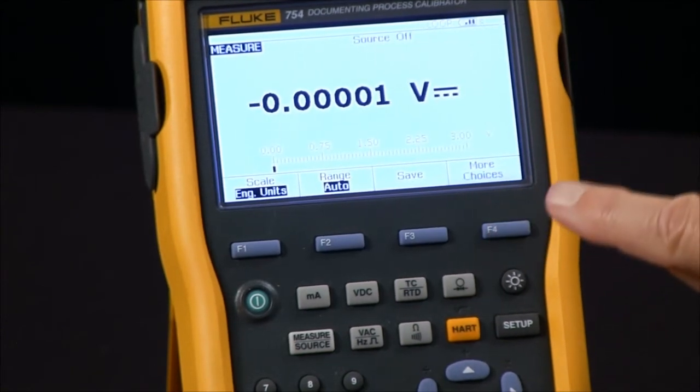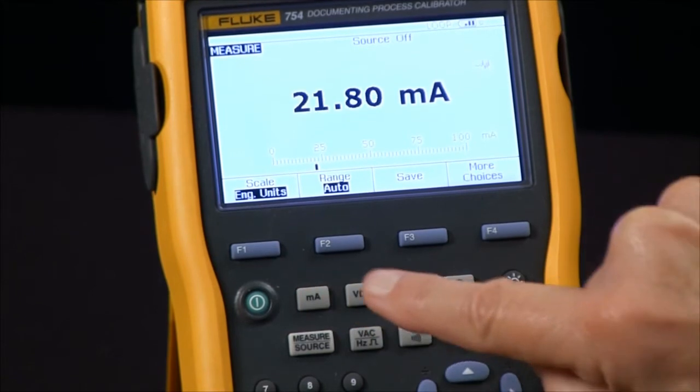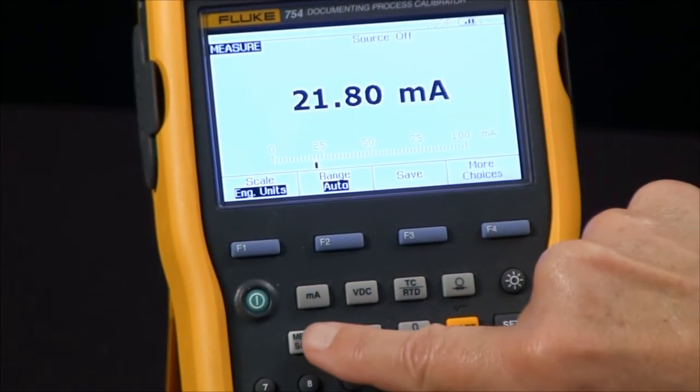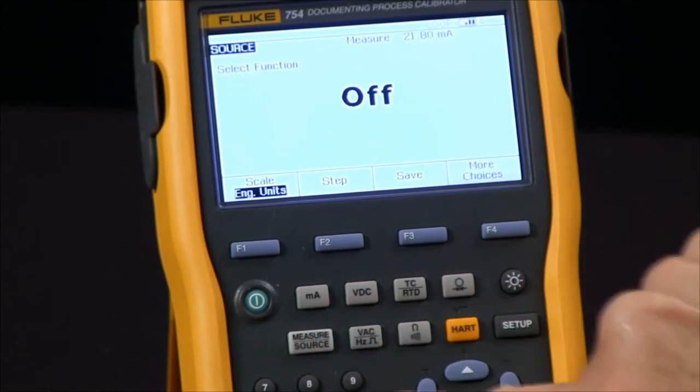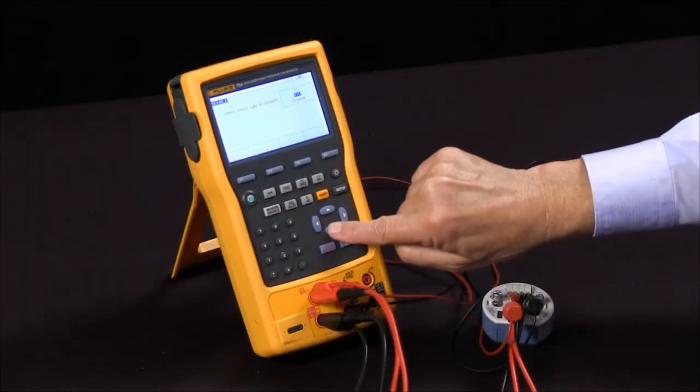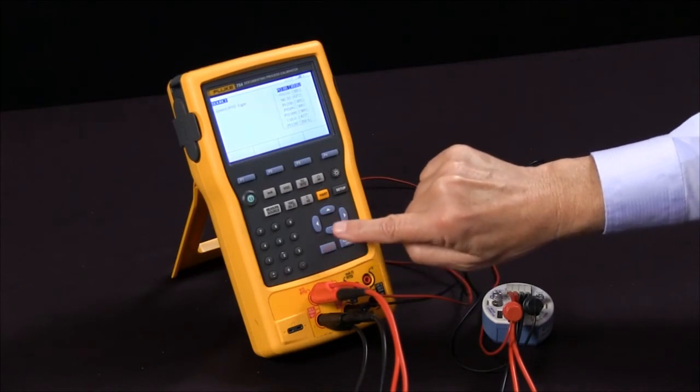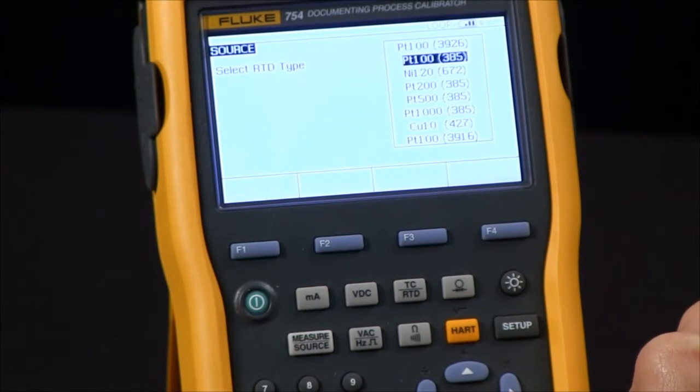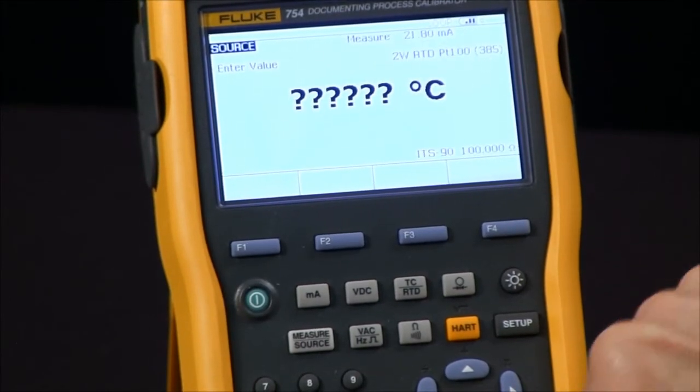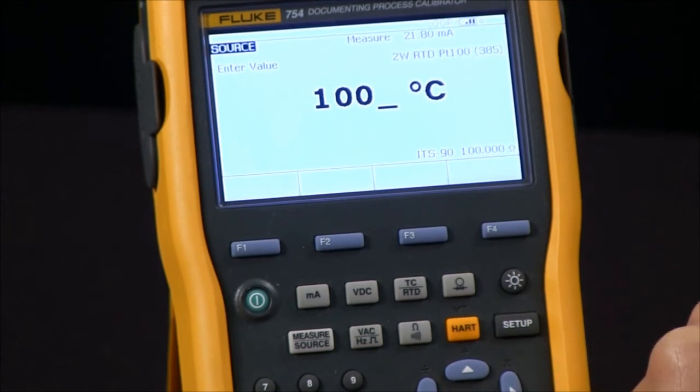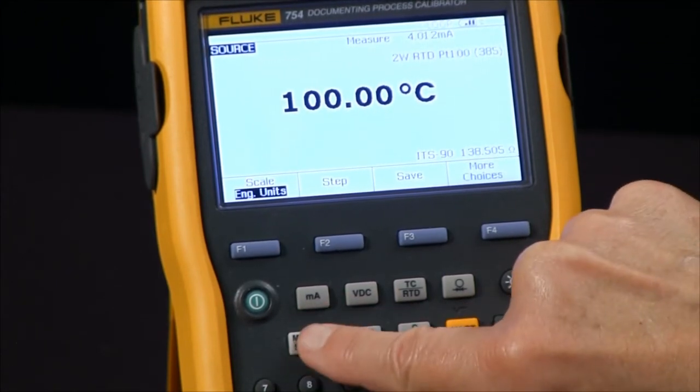If I go to source measure source and select RTD, it asks me what type of RTD - platinum 100 ohm 385. It asked me to put in a temperature, so I'm going to put in 100 degrees. Going back to the source measure screen, now I'm sourcing two terminal RTD platinum 100 ohm 385 to the transmitter.